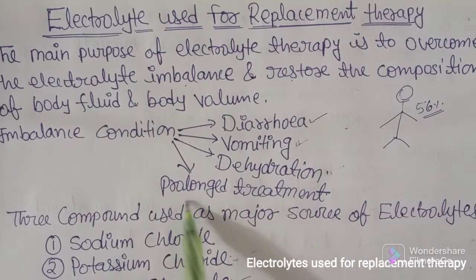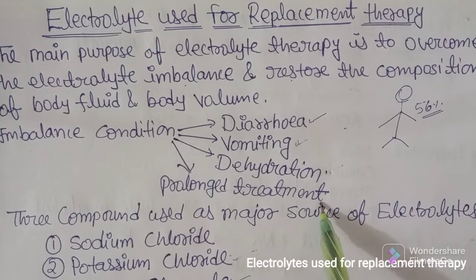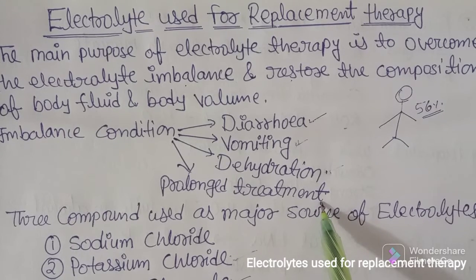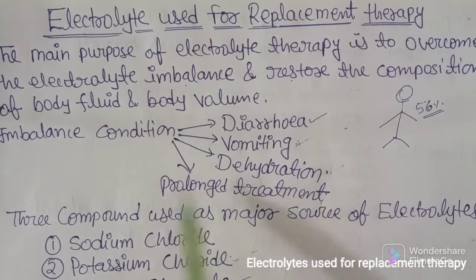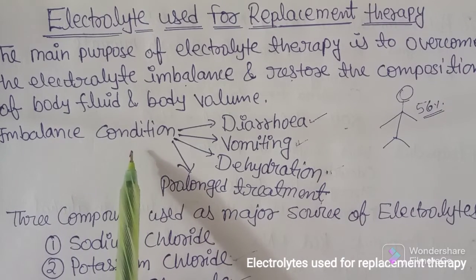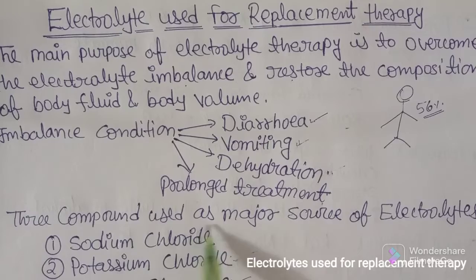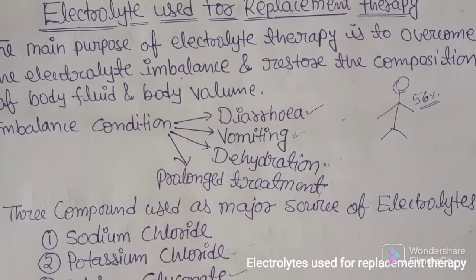Another condition is prolonged treatment — whenever a patient undergoes long-term continuous medication, dehydration can also occur. That is why in hospitals they give saline continuously for a long time. If you are admitted for fever or any infection, the electrolyte imbalance condition may occur where the person will lack electrolytes such as sodium, potassium, magnesium, calcium, chloride, etc.